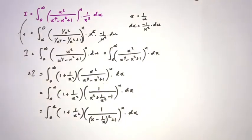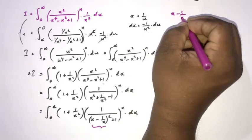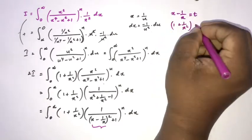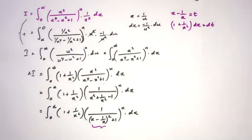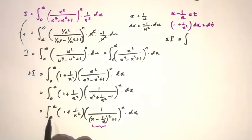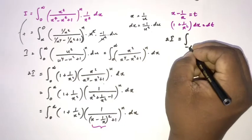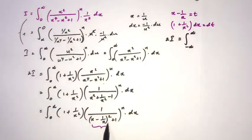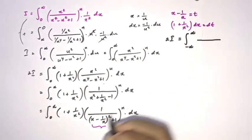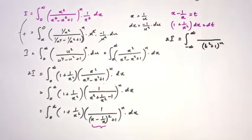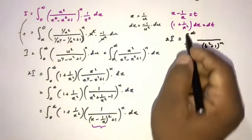We take the substitution t equals x minus 1 over x, so differentiating gives 1 plus 1 over x squared times dx equals dt. Changing boundaries: when x approaches 0, t approaches minus infinity; when x approaches infinity, t approaches infinity. The integral becomes 2I equals the integral from minus infinity to infinity of 1 over t squared plus 1, raised to the n-th power, times dt.